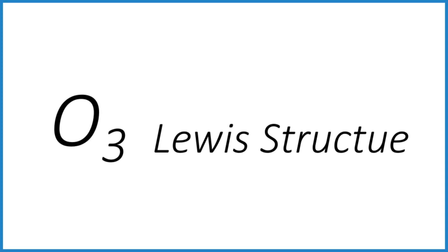We're going to draw the Lewis structure for ozone, and here's how we do it. First thing, we have O3. Let's put three oxygen atoms in a row.